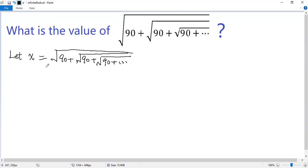Now square both sides, so we get x squared equals 90 plus square root of 90 plus square root of 90 plus, again dot, dot, dot stands for the infinite process.